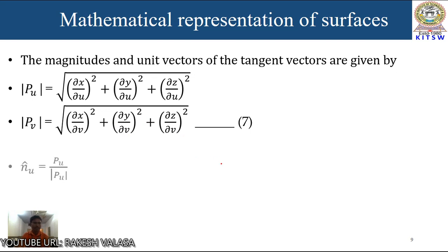The unit tangent vectors are: n̂u equal to pu divided by |pu|, and n̂v equal to pv divided by |pv|. This is equation number 8.